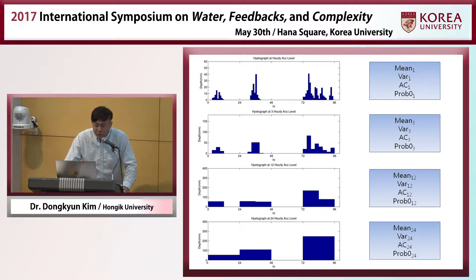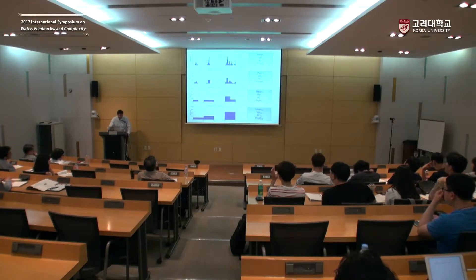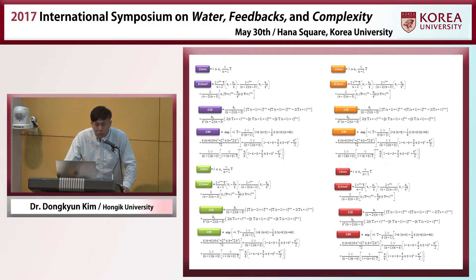To obtain more equations, we consider different aggregation levels of the time series. The same rainfall occurrence can be represented at one-hour, three-hour, 12-hour, and 24-hour time steps, and we can calculate different rainfall statistics for each. Now we have 16 equations but only six unknowns, so we cannot find a solution that perfectly satisfies all 16 equations.